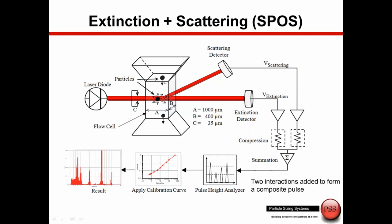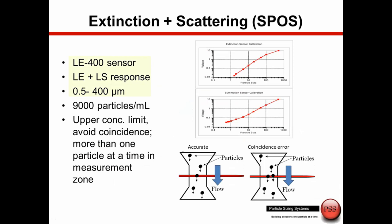This is the LE400 sensor, which has a range of 0.5 to 400 microns. When we use both extinction and scattering it has a dynamic range of 0.5 to 400, and there is an upper concentration limit on the scale of around 9,000 particles per ml. This limit exists because we can only have one particle at a time passing through the sensing zone. If two particles pass simultaneously, we count and size them as one larger particle — a coincidence error. This is why we need to be aware of sample concentration and may need to dilute to avoid these errors.